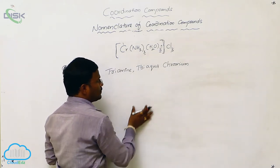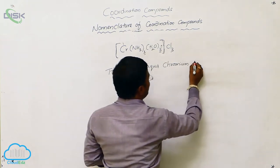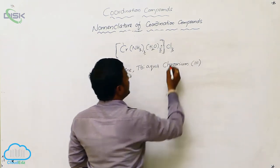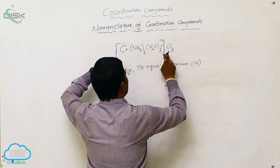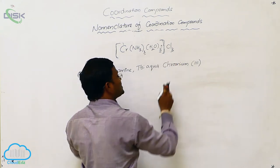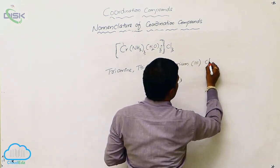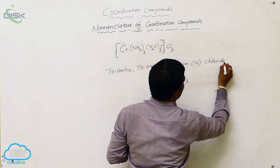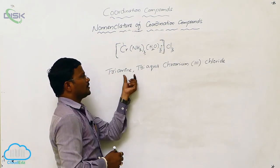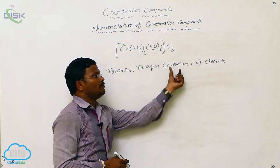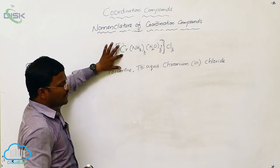What is the oxidation state of chromium in the given metal complex? With the end of the name up to the coordination sphere, outside the coordination sphere, counter ions such as chloride ions are satisfied. So combinedly the name for the compound is triamine triaqua chromium(III) chloride. This is the name provided for the given coordination compound.